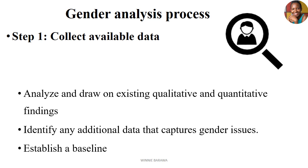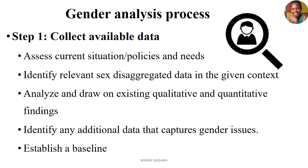Step one is to collect available data. Being a systematic process, when you're conducting gender analysis there are certain steps you need to understand and follow to get your data in place before making a final decision. Remember that gender analysis is the method you use to collect data about men and women so you can make a conclusive approach and come up with better interventions. To find that conclusion, you first need to collect the data.